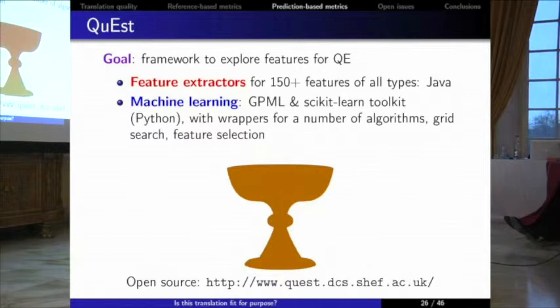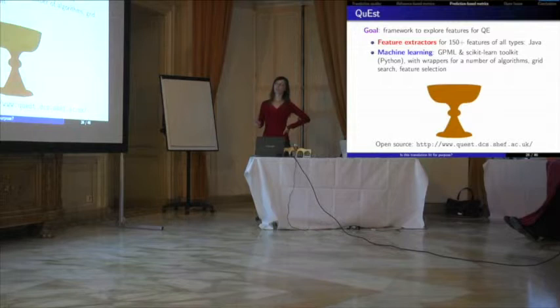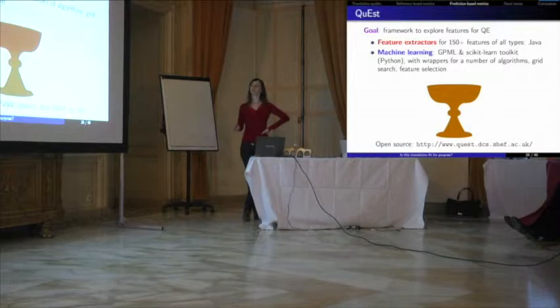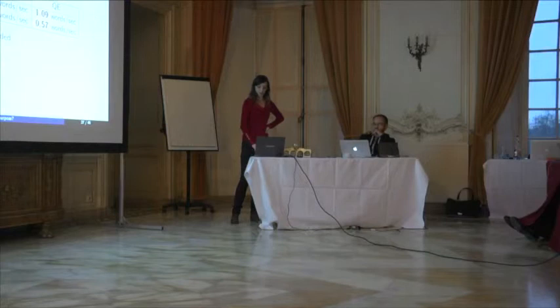We have a framework to extract features called Quest, for quality estimation. It's available as open source, extracts those simple features plus hundreds of others, and has wrappers for machine learning — specifically for the scikit-learn Python toolkit and for a Gaussian processes toolkit, also in Python.